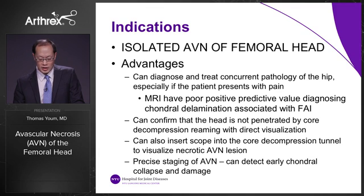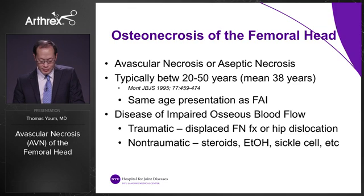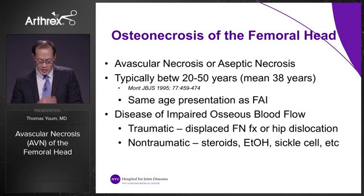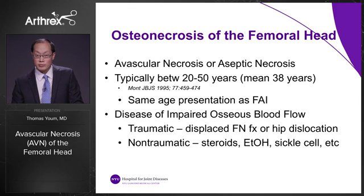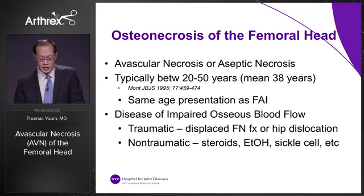You can detect early chondral collapse and damage when you look at it arthroscopically. Avascular necrosis, or aseptic necrosis of the femoral head, typically occurs in patients between 20 and 50 years, with a mean age of 38 years — the same age presentation as femoral acetabular impingement. It is a disease of impaired osseous blood flow. It can be traumatic, such as displaced femoral neck fracture or hip dislocation, or non-traumatic, associated with steroids, alcohol abuse, sickle cell anemia, etc.